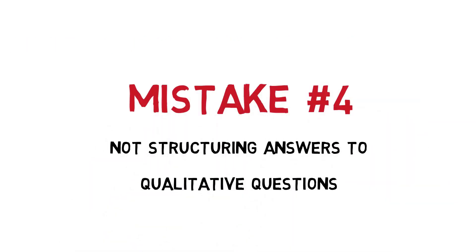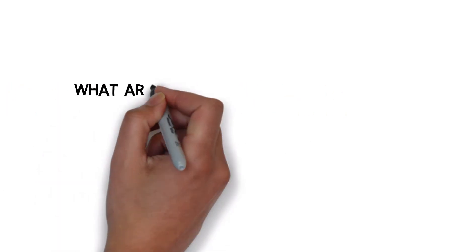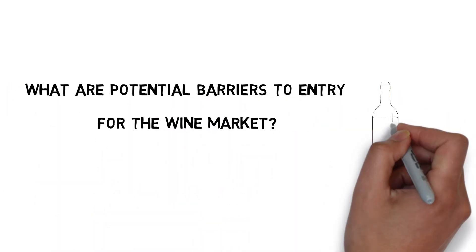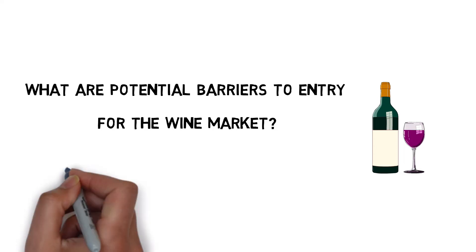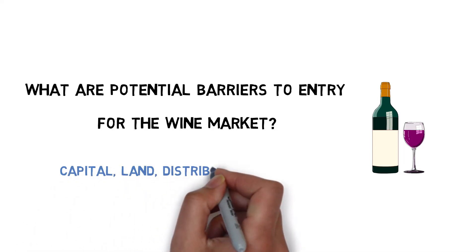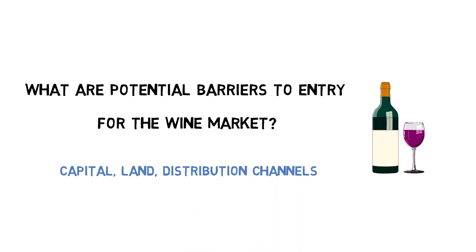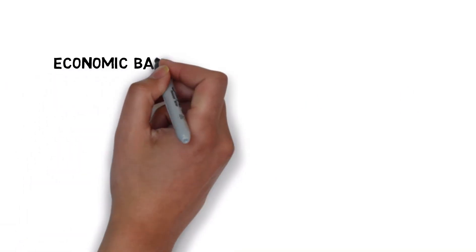Mistake number 4: not structuring answers to qualitative business questions. Imagine being asked: what are potential barriers to entry to enter the wine market? Most candidates list the first few ideas that come to mind — things like capital, land, or distribution channels. The top 1% candidates differentiate themselves by structuring their answers. A simple structure such as thinking about barriers as economic barriers and non-economic barriers both facilitates brainstorming and signals that you are a highly logical and structured thinker.